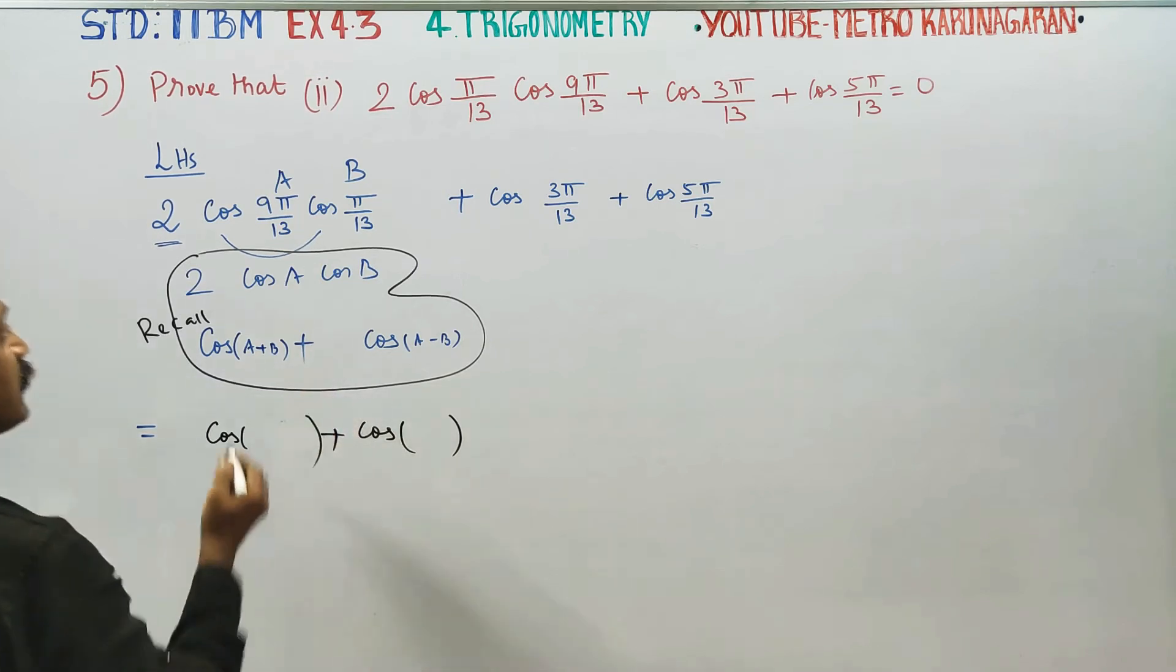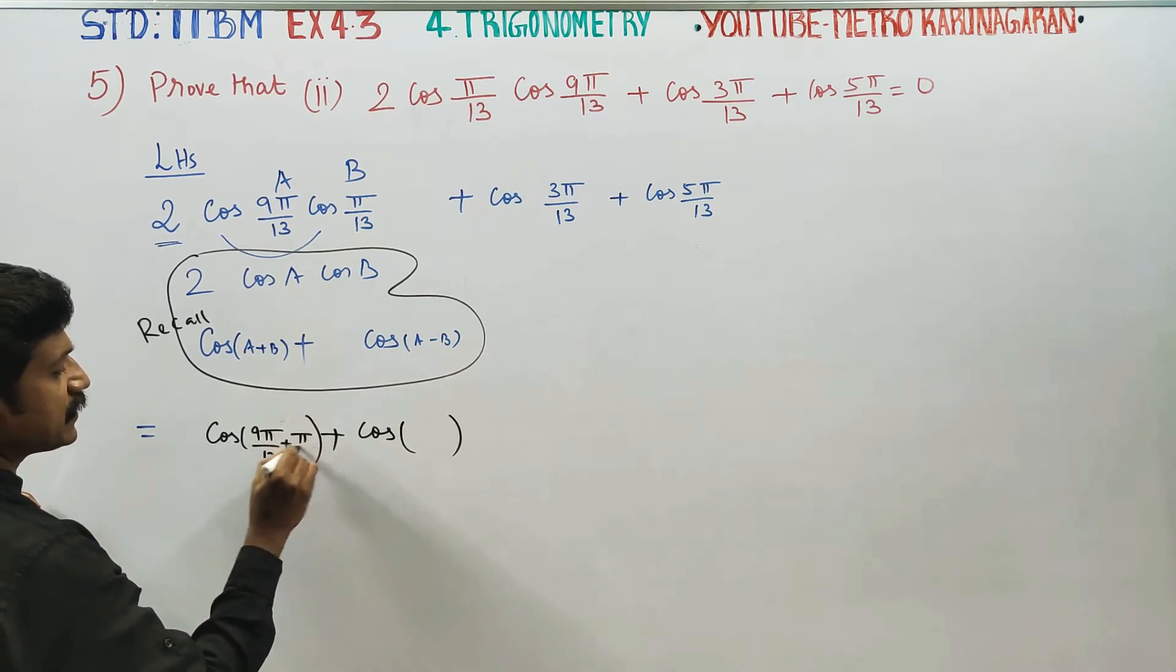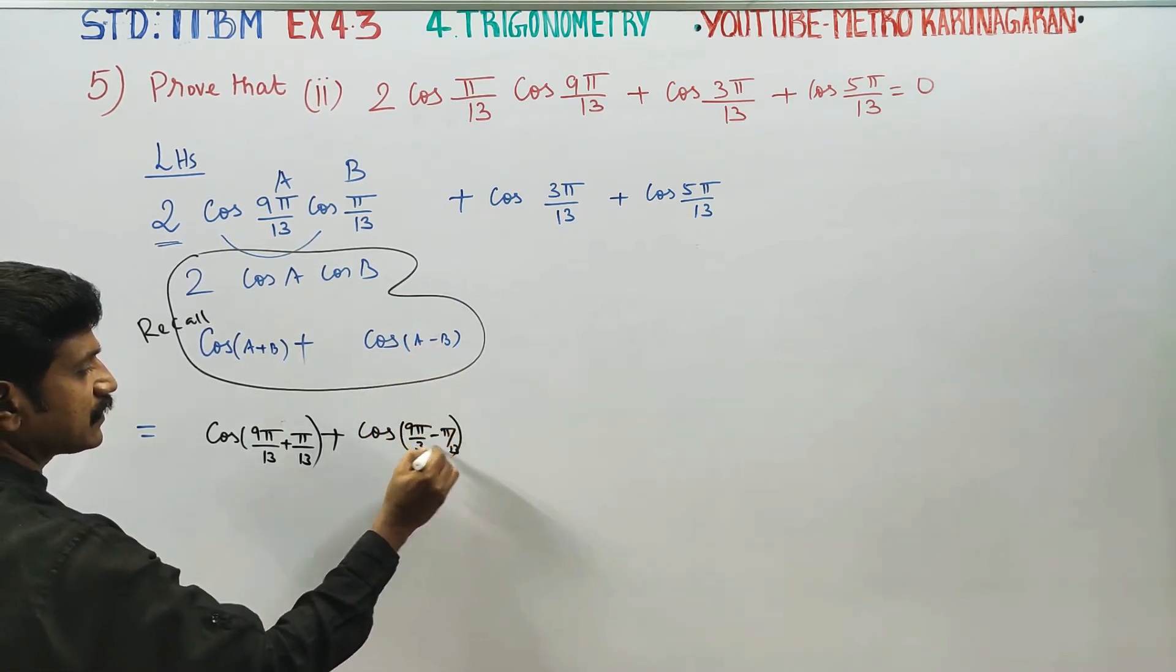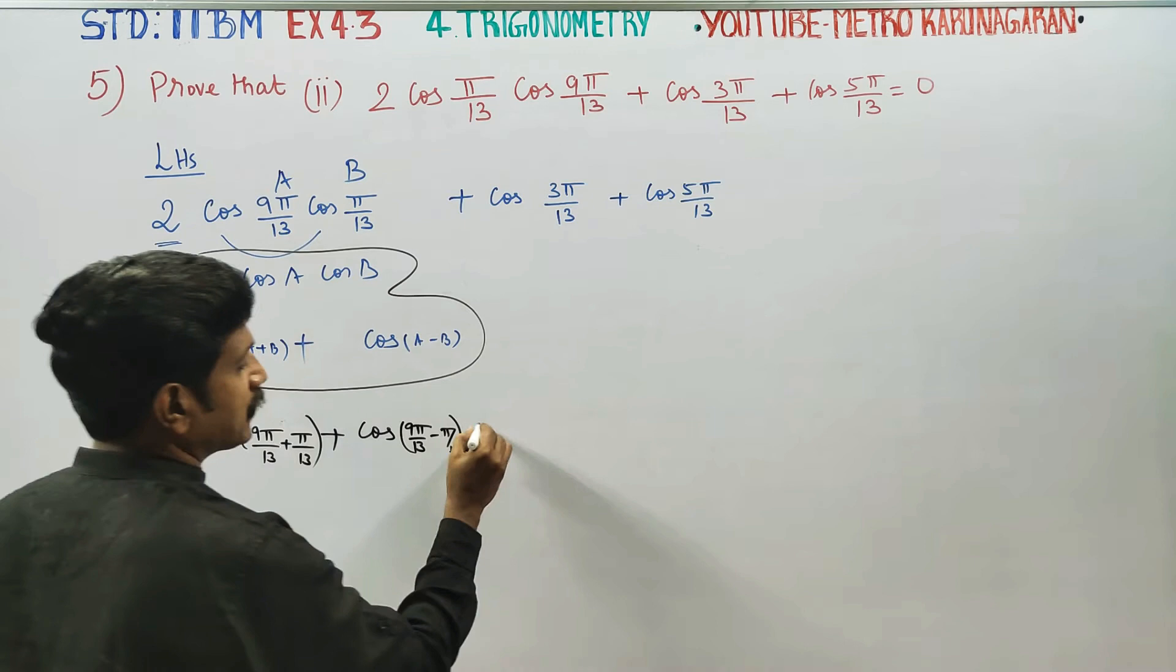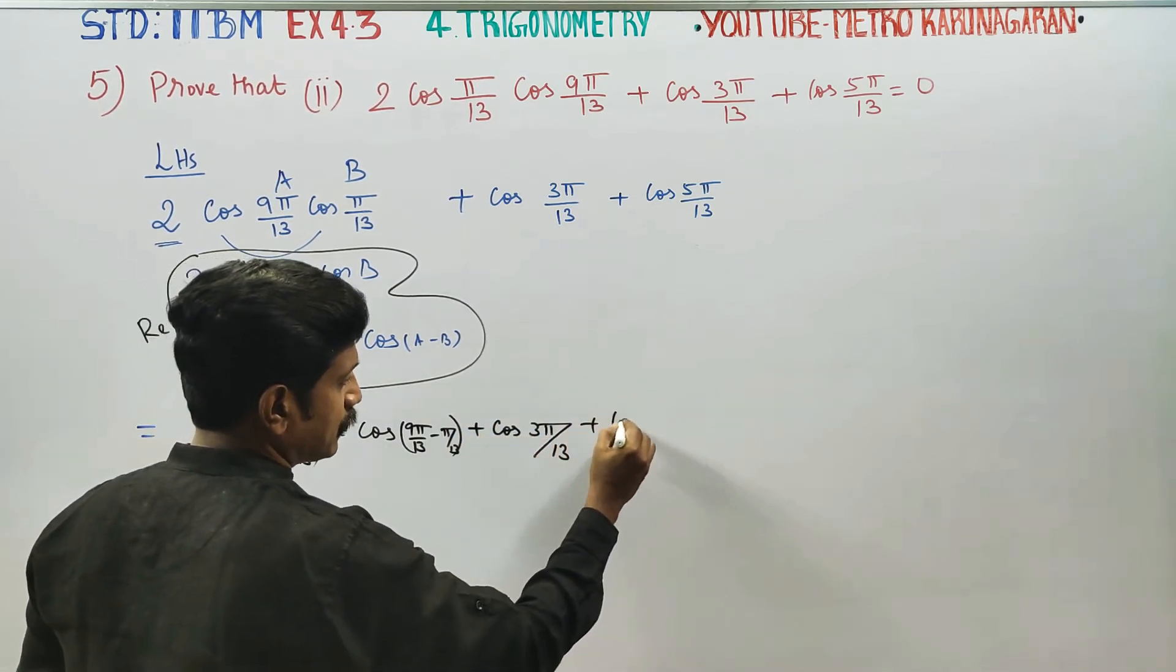What is your A value? 9 pi by 13 plus 5 by 13. If you have A minus B, then you will have minus 5 by 13. If you have cos, cos, 5 pi by 13.